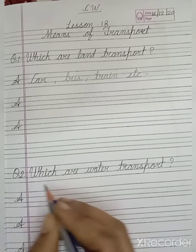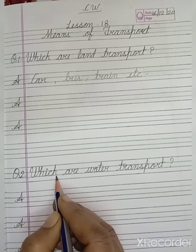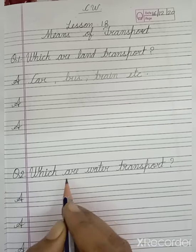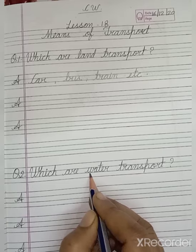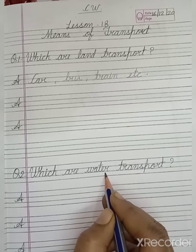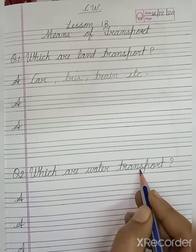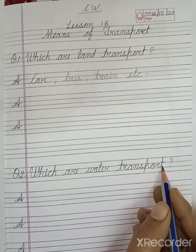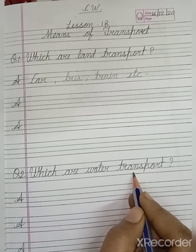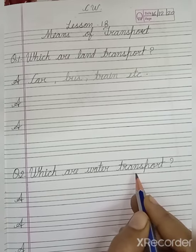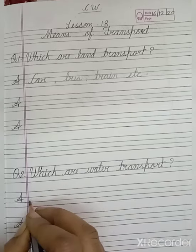Now read our next question. W H I C H which means kaun sa, A R E are means hai, W A T E R water means paani, T R A N S P O R T transport. Water transport kaun se hote hain? Water transport woh hote hain jo paani mein chalte hain. Now write our answer.